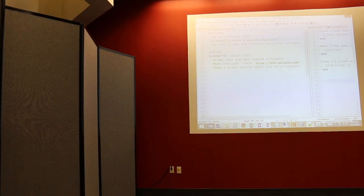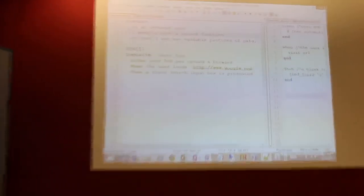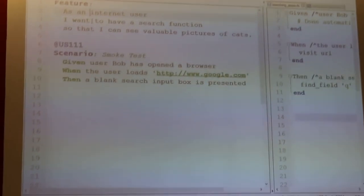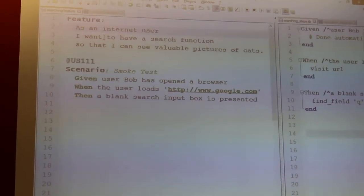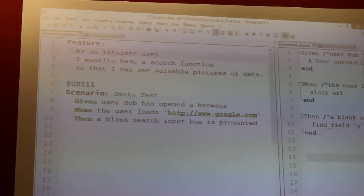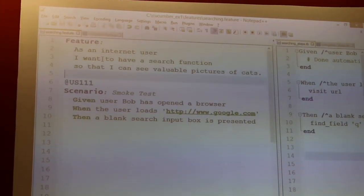So typically what we do for the feature files that organize our scenarios, our test scenarios. So a lot of times a feature will correspond to a user story or cover several user stories. So sometimes what I do is just use the story text in the feature. So you have the as a internet user, I want to have a search function so that I can see valuable pictures of cats. So in this scenario, I have a smoke test. And so given that the user Bob has opened the browser, when the user loads Google.com, then a blank search input box is presented. And so that's the English part.